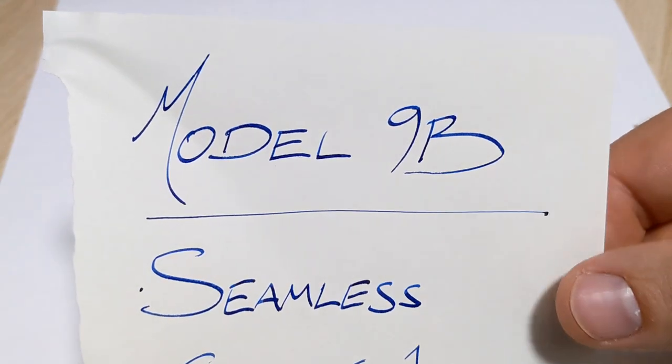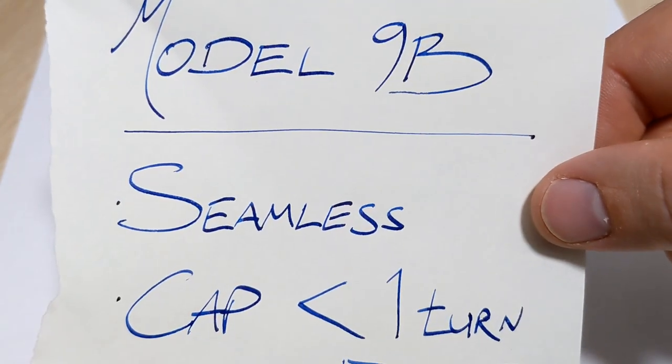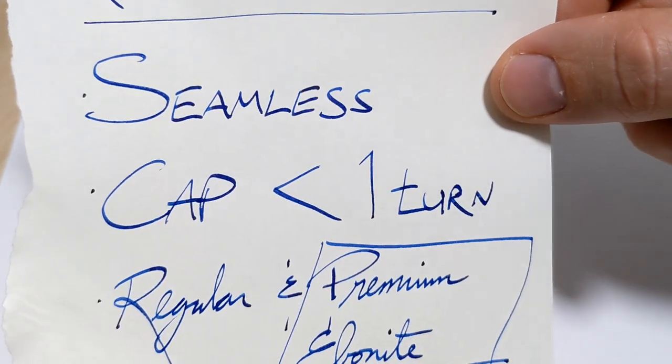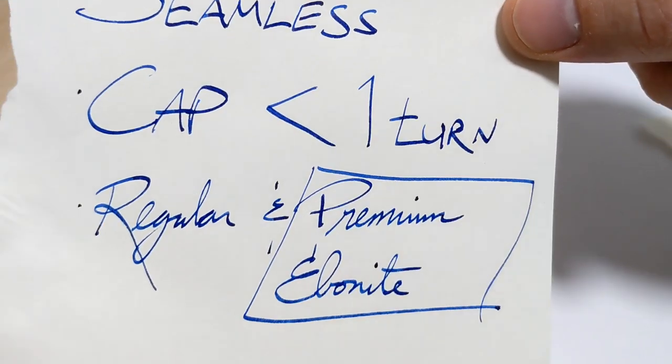This one is the seamless version. The cap threads in less than one turn and you can get it with the regular ebonites or the premium. I would recommend that. You've got lots of options, that's what's really wicked with Ranga.